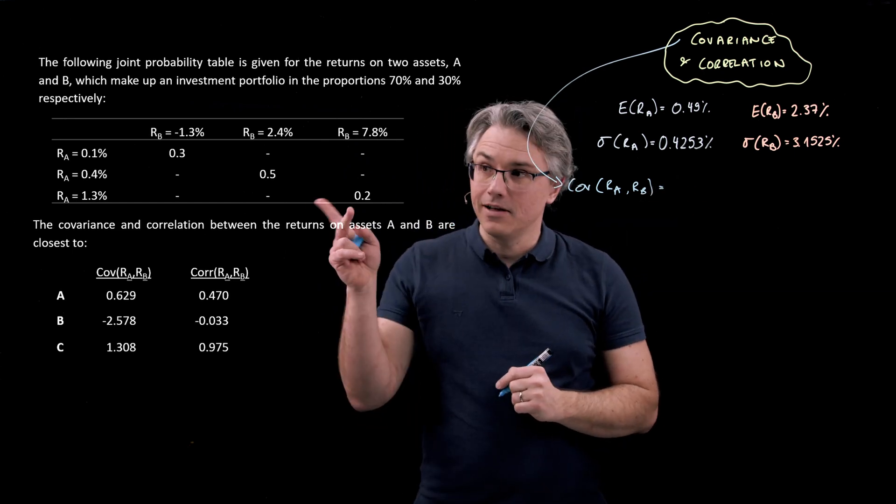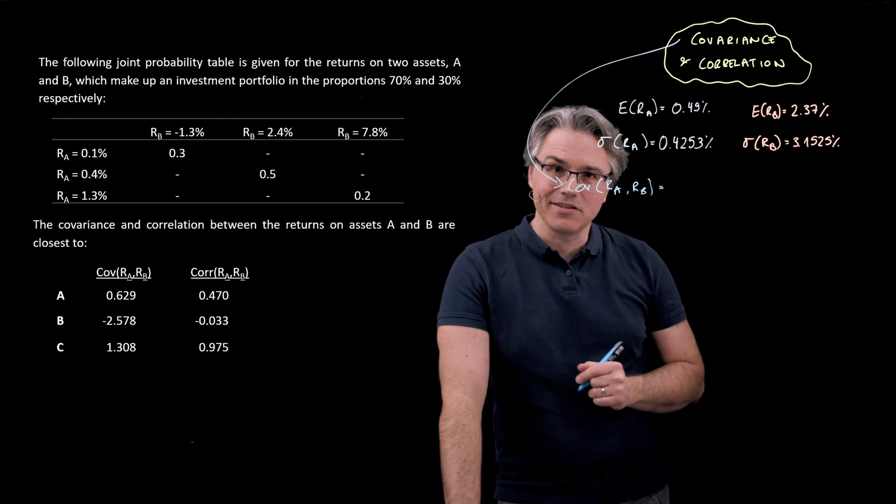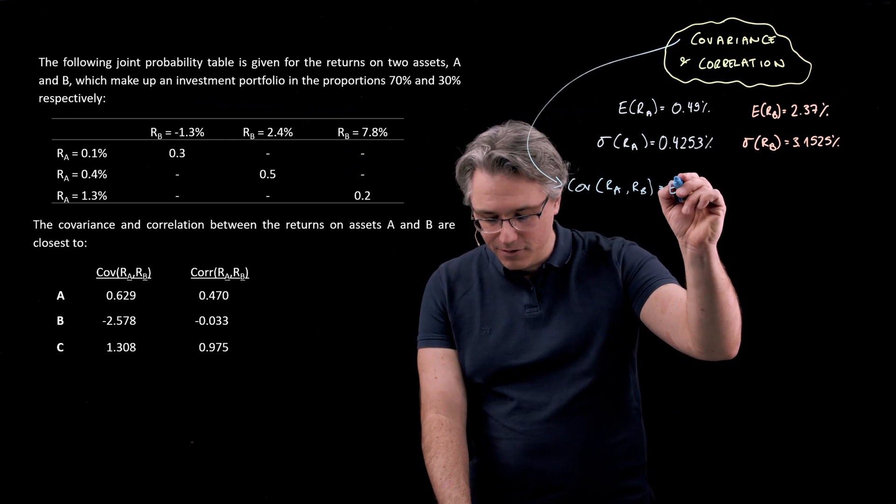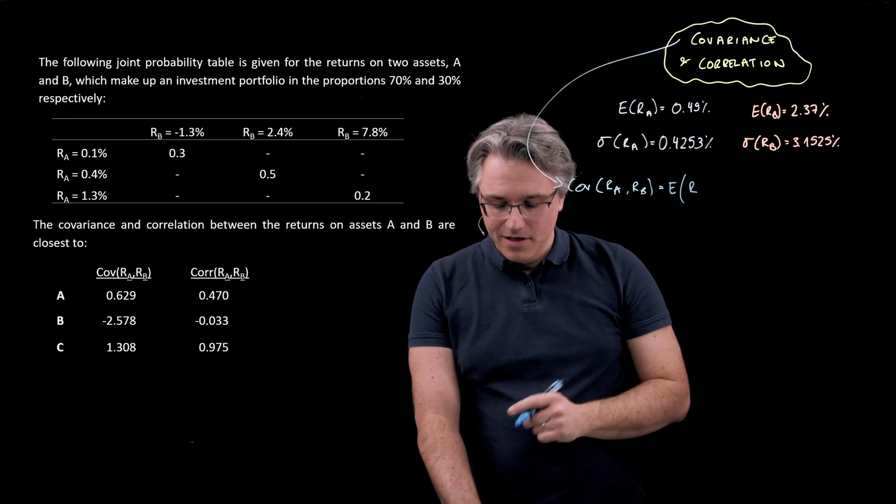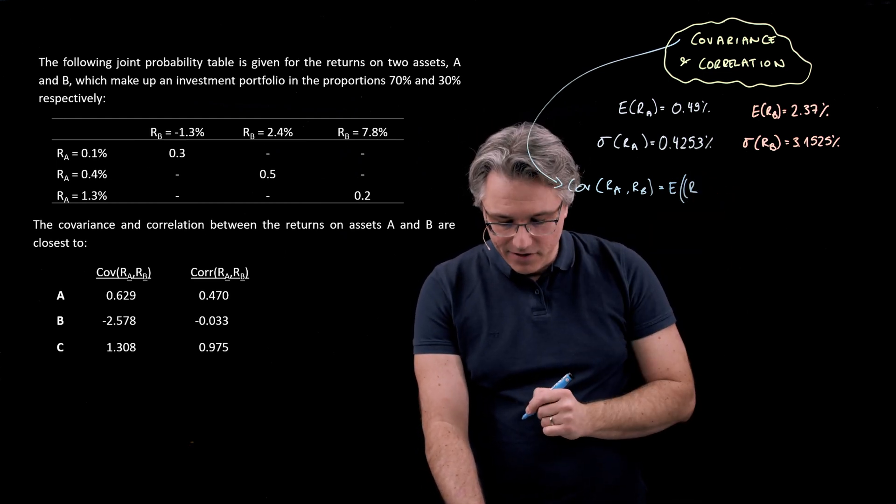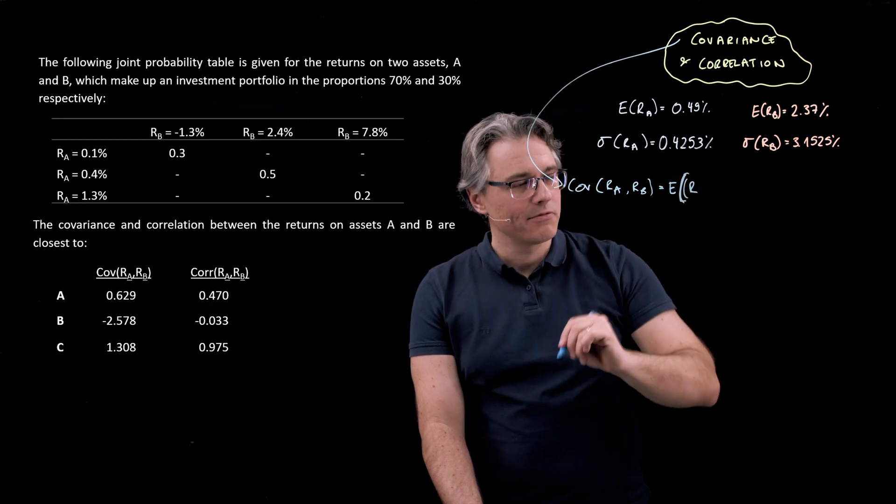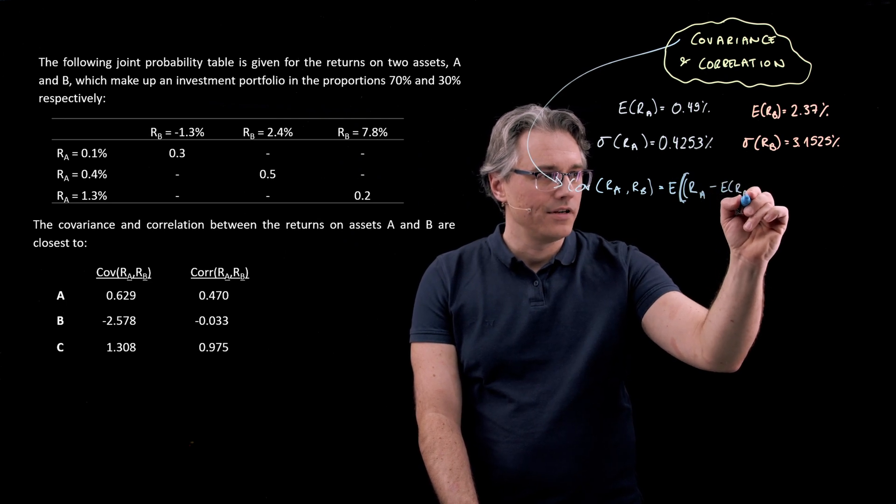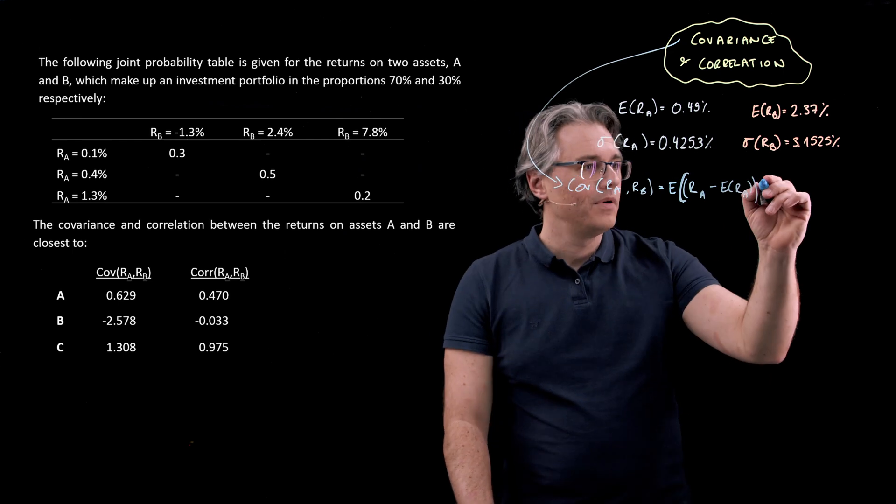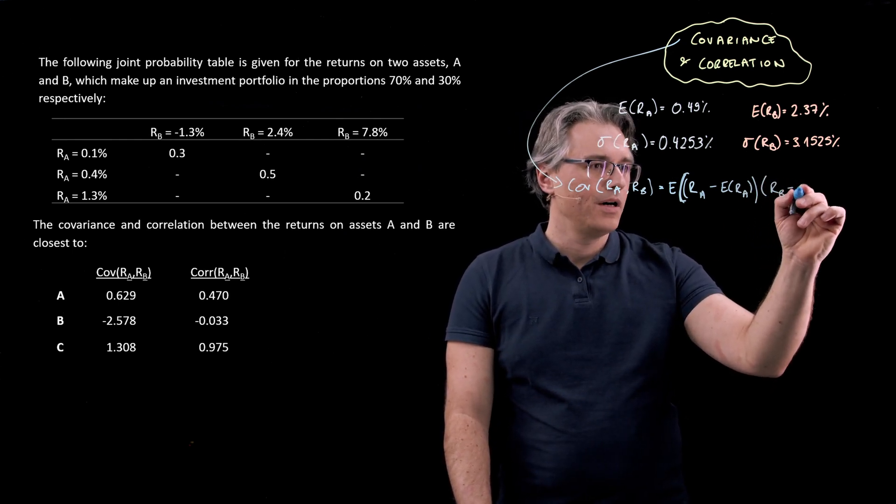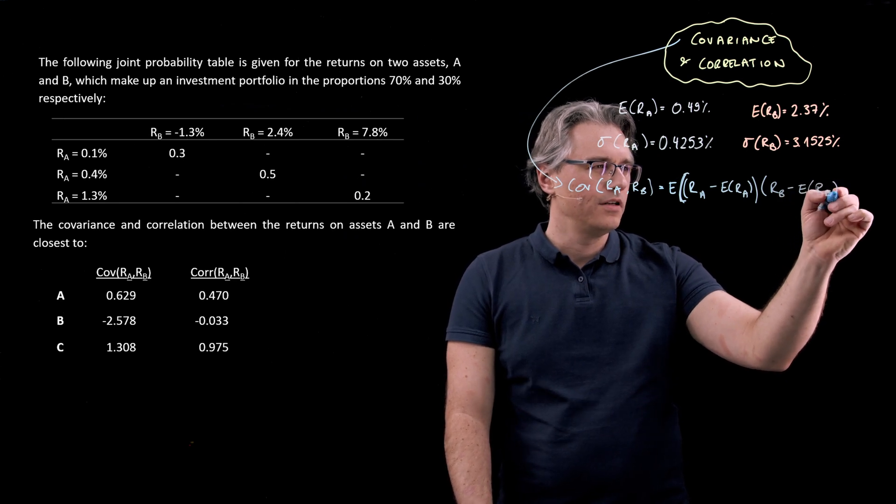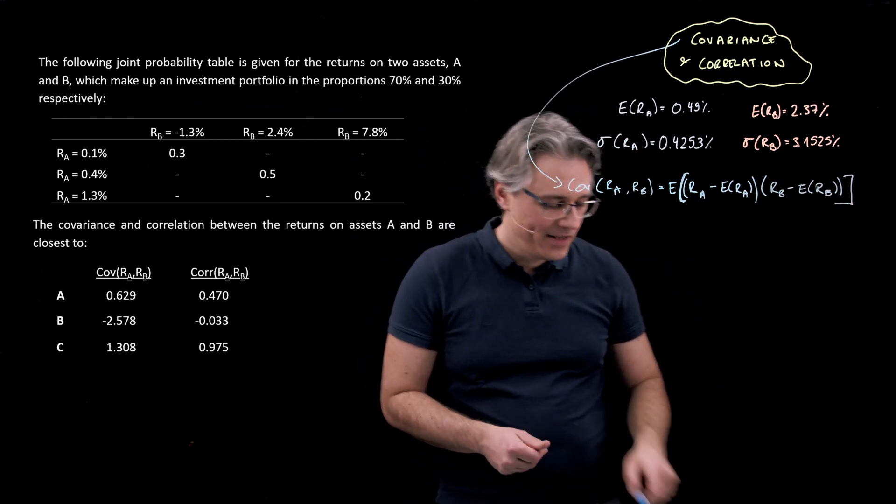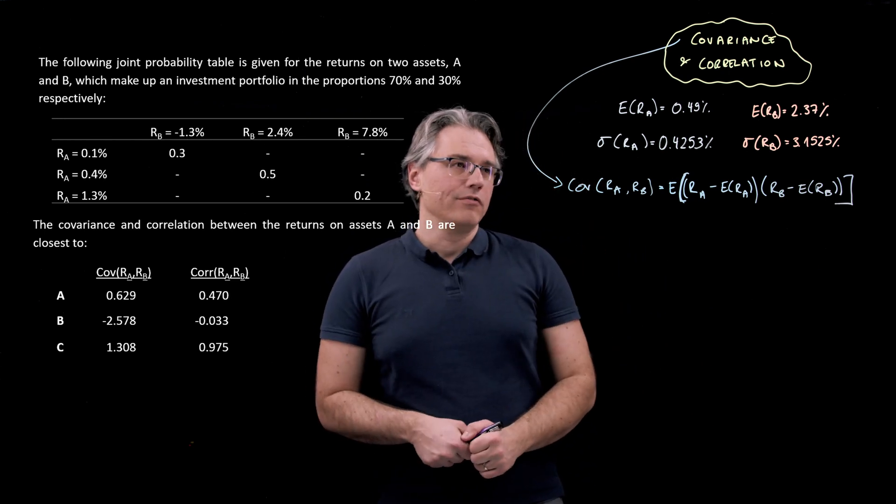The way to compute this with data provided in such a table is to say it's the expected value from the following. In the middle of my table, I'm going to have the return on asset A minus its expected return, multiplied by the return on asset B minus its expected return.